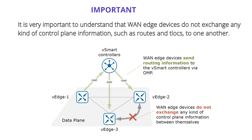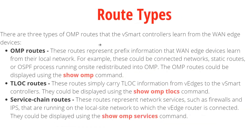Do not take this as data plane. Because in data plane, the two sides have to talk — that's the whole purpose of VPN. Various vEdge devices do not exchange any kind of control plane information — not data plane. Data plane routing, next hop, and everything else — there is no problem with that. They can exchange that. IPsec VPN related stuff, they can exchange. This applies only to the control plane.